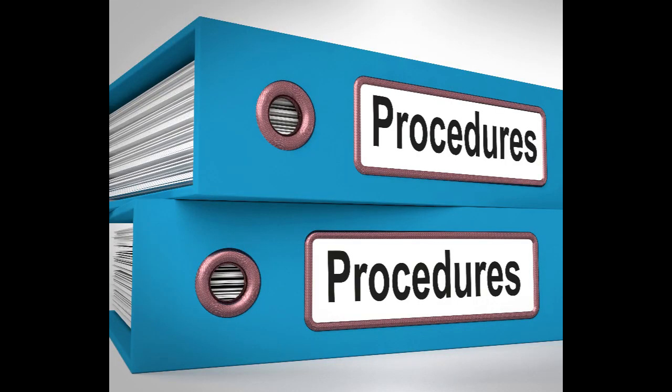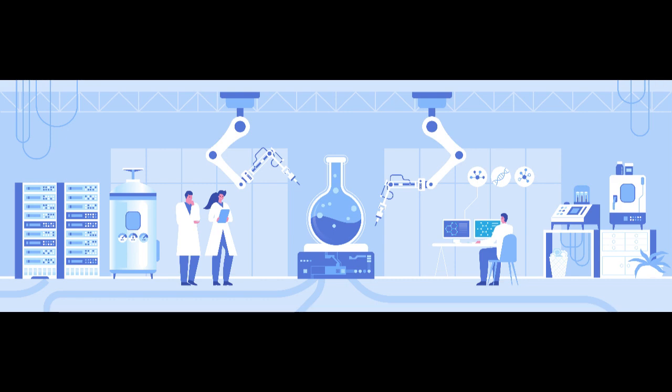Clause 7.5 begins by emphasising the importance of establishing documented procedures for production and service provision. These procedures should define the necessary activities, resources and controls required to manufacture and deliver medical devices. By having clear and well-documented procedures, organisations can ensure that all personnel involved in the processes understand their roles and responsibilities, leading to consistent and reliable outcomes.